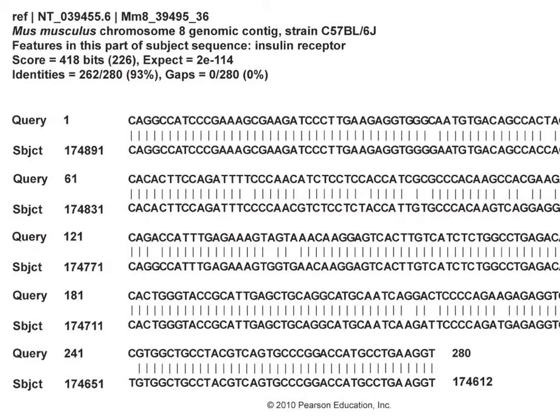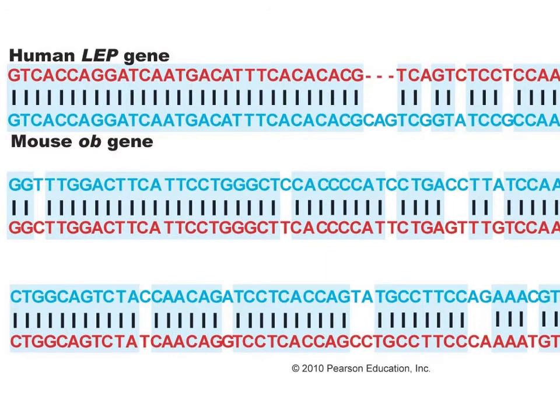When we analyze sequence data, we have many resources that enable us to test hypotheses of similarity, identity, or patterns of heredity. Here's an example where a query sequence — one we have generated in the lab — is submitted for comparison and comes back with a hit: a 93% match. This subject sequence is in a publicly available database, so there's information associated with it that I can use to understand the data generated in my query.